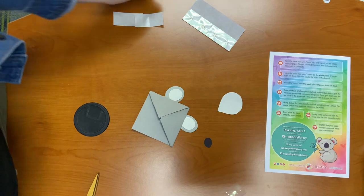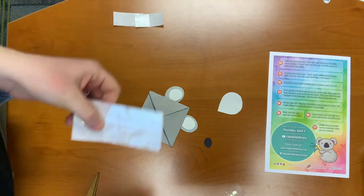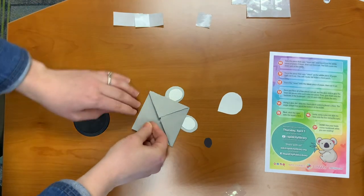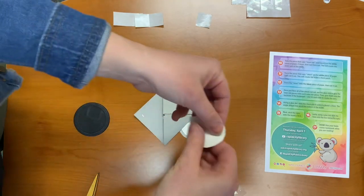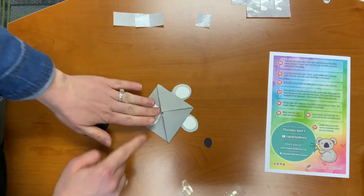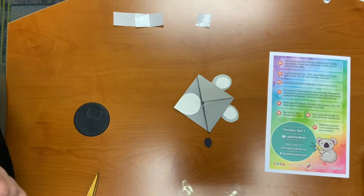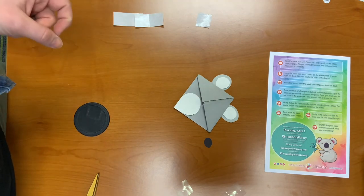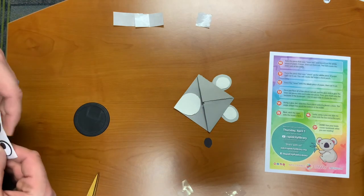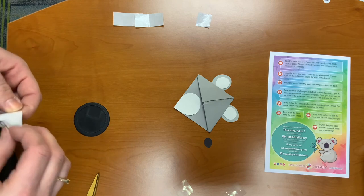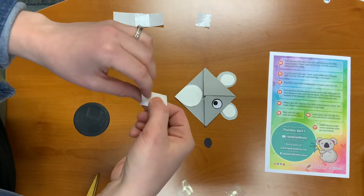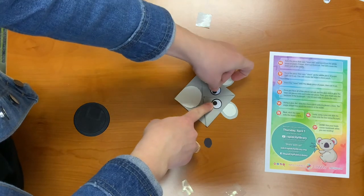Step fourteen. Using a glue dot, stick the chest patch onto the koala's chest. And this angle right here should line up with the bottom. Step fifteen. Stick the koala's eyes onto the face. Put one over here. And one over here.